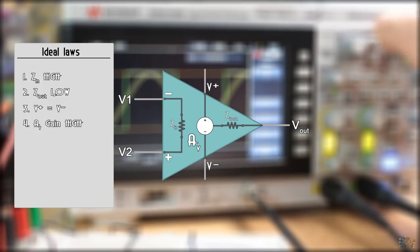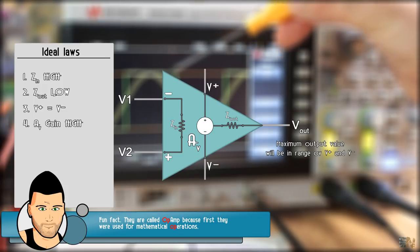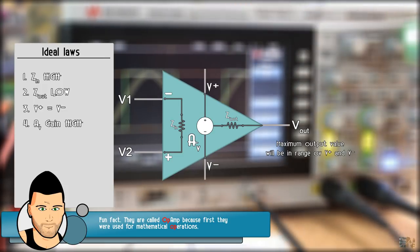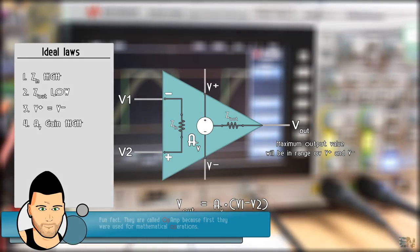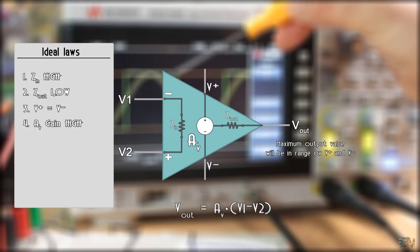But of course, it won't amplify the input signal by infinite. One obvious thing is that the output could have its maximum value, the supply of the op-amp. It can't be higher or lower than that, so even with gain infinite, the output will saturate at the supply value.